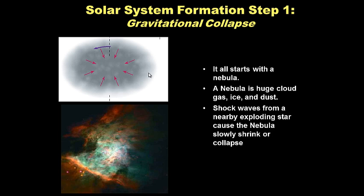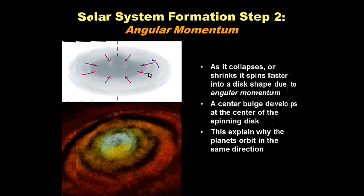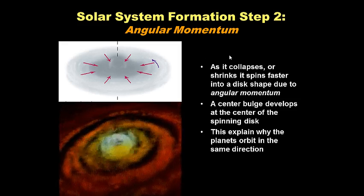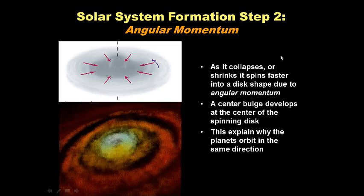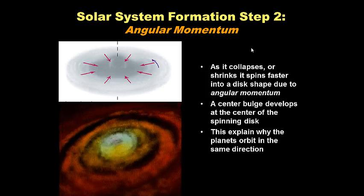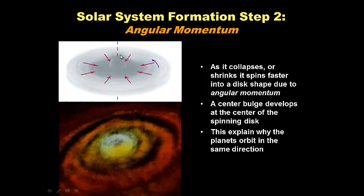An interesting thing happens as the cloud shrinks. Think of an ice skater: when she brings her hands and legs to her chest, she starts to spin really fast. This is called angular momentum — a concept from physics you'll learn more about later. As this nebula shrinks, it starts to spin at the same time. That spinning motion is step two of solar system formation.